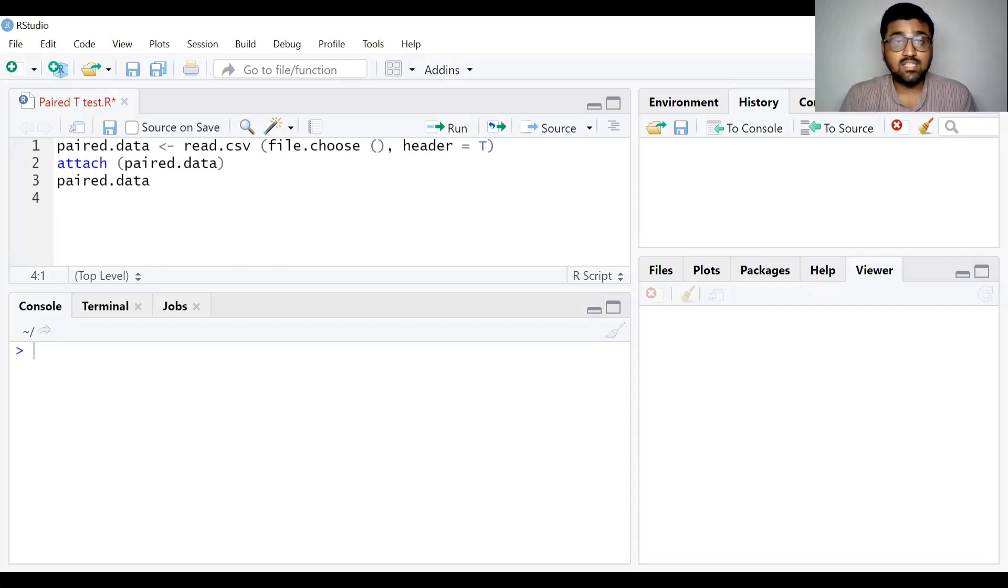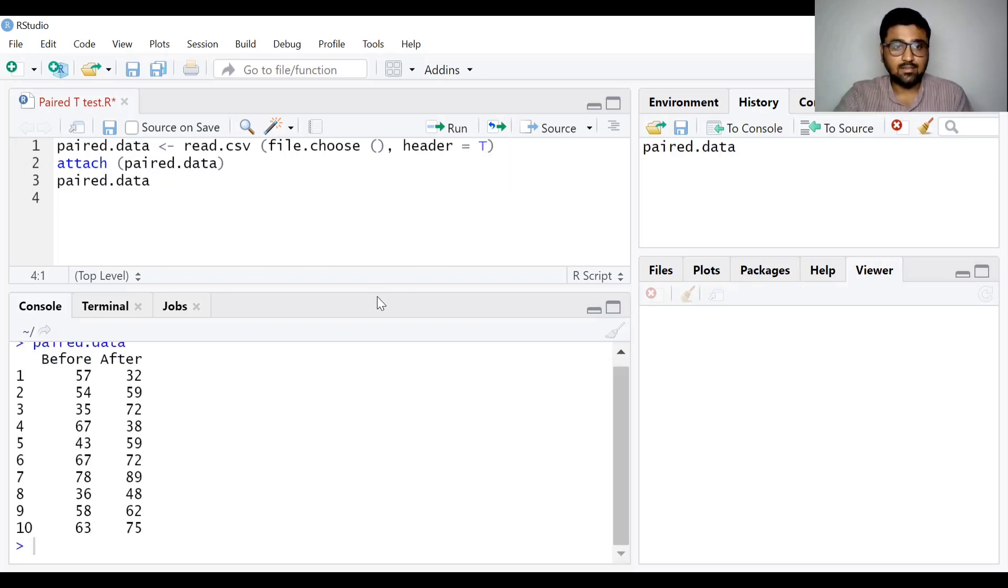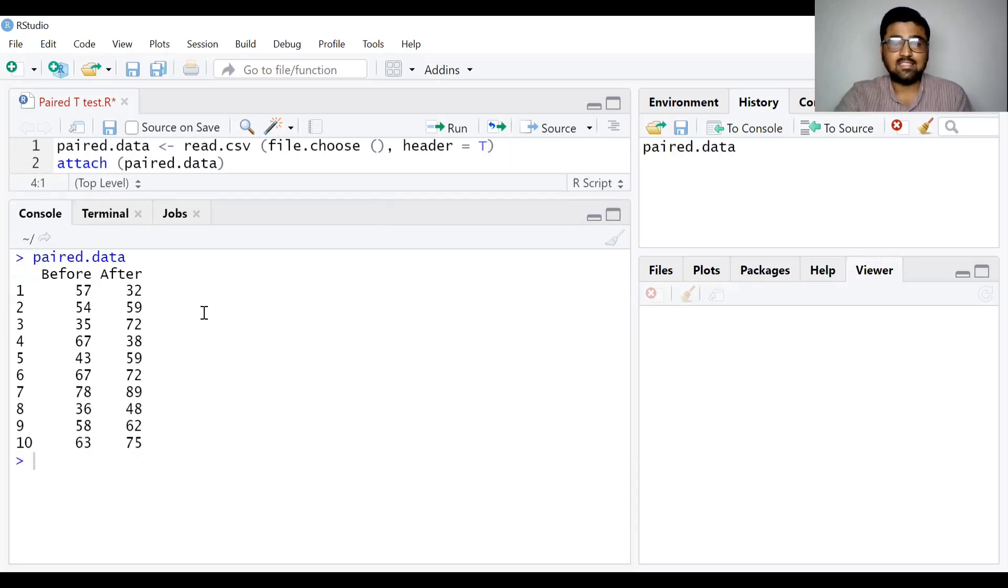You can now see the R studio window. I have already inserted the data. I have saved the data as paired.data. This is our data. We have the data from 10 students before and after remedial classes.